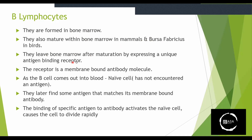B cells express unique antigen binding receptors. As B cells mature and come out into the blood, they have a membrane-bound antibody molecule as a receptor. Even though they have not yet encountered an antigen, they are mature and carry a receptor. When they find an antigen that matches their membrane-bound antibody, the binding of the specific antigen to the antibody activates the cell and causes it to divide rapidly.